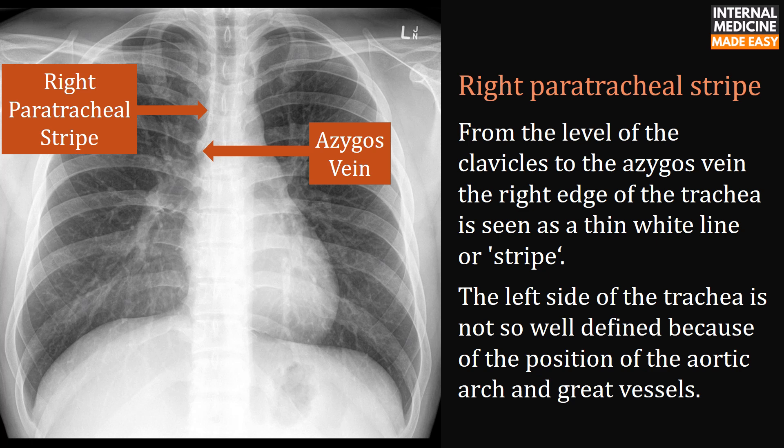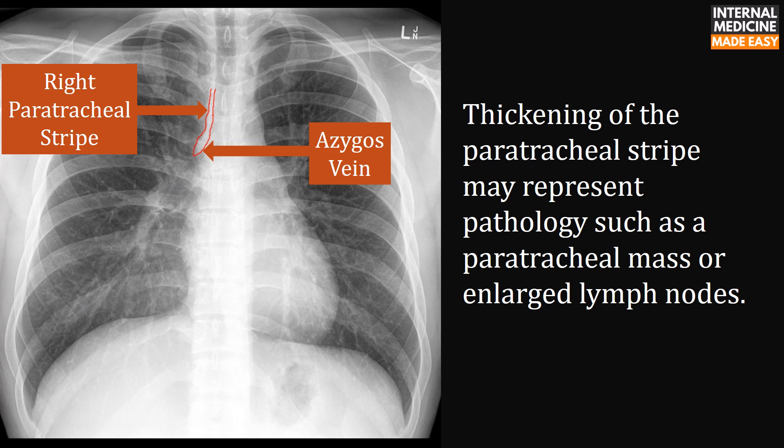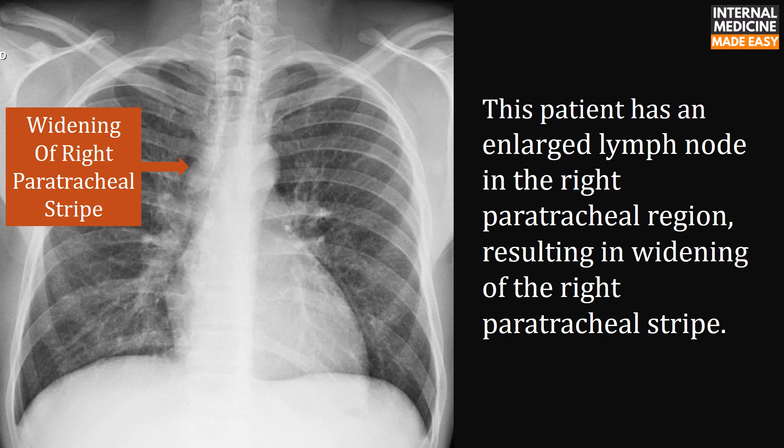The right paratracheal stripe: from the level of the clavicles to the azygous vein, the right edge of the trachea is seen as a thin white line or stripe. The left side of the trachea is not as well defined because of the position of the aortic arch and great vessels. Thickening of the paratracheal stripe may represent pathology such as a paratracheal mass or enlarged lymph nodes. This patient has an enlarged lymph node in the right paratracheal region, resulting in widening of the right paratracheal stripe.